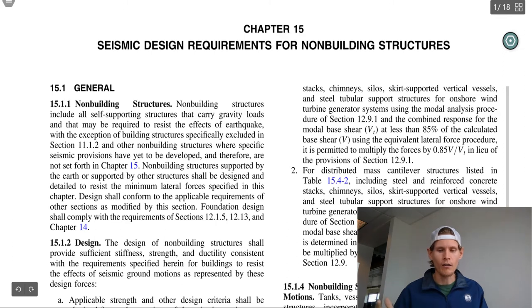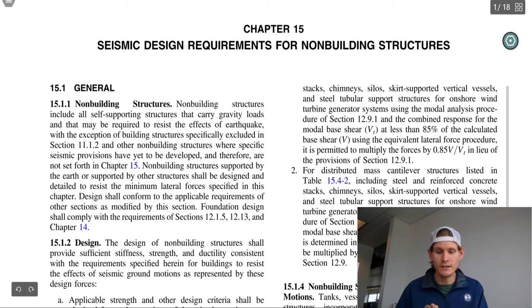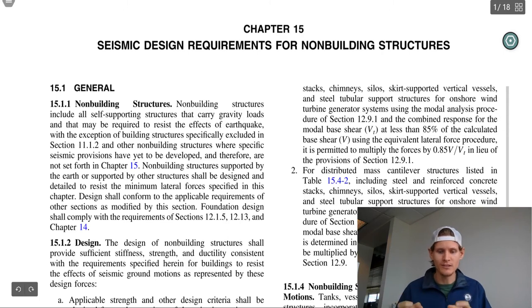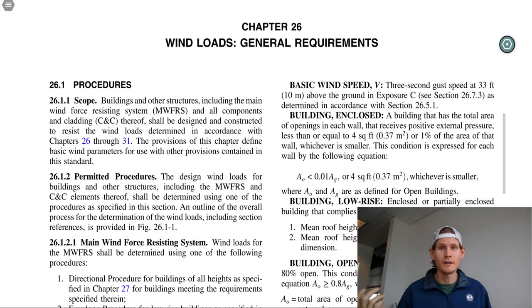Next I have 'Non-Building Structures' tabbed on page 145 — this is Chapter 15. It's another seismic tab, but all three of these seismic tabs are really nice to flip to so you can quickly analyze your building: is it a full building, is it just a small frame system for a generator, or is it a non-building structure? Based on your building type you'll flip to the appropriate chapter — you can't use the same chapter for everything.